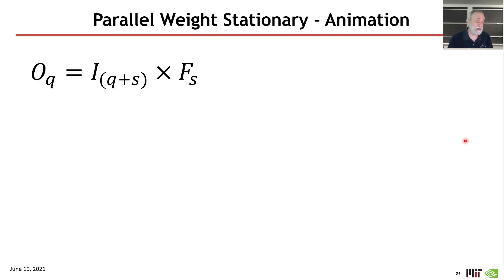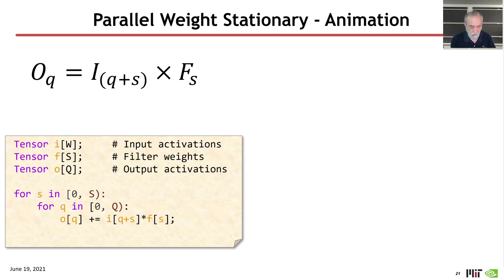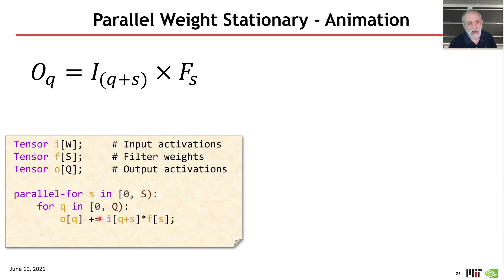That wasn't a particularly interesting case, because it didn't have any parallelism. And so, what we can say is, starting from that same einsum expression for the one-dimensional convolution, we can have a loop nest, where now, we're going to run all the S values in parallel, and we're going to, in the inner loop, go sequentially over the output values.